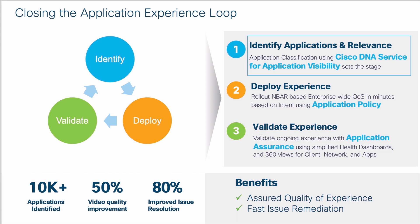Application assurance is based on all the telemetry we collect from the network, where we're able to calculate health scores for applications and calculate various stats for every application such as delay, jitter, and packet loss. You also want to know where exactly the delay is — whether it's on the client-facing side, the network delay, or the delay on the application side. All of these are delivered as part of application assurance.